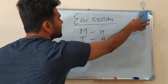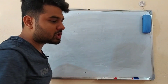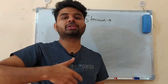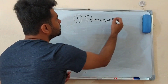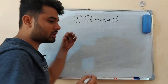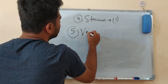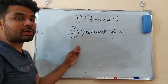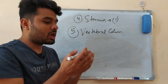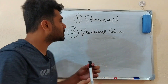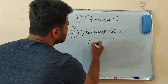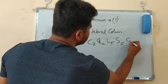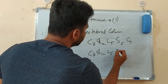Continuing with the axial skeleton, we now look at the vertebral column. The vertebral column in a child has more bones. The formula is: Cervical 7, Thoracic 12, Lumbar 5, Sacral 5, Coccyx 4 — giving 33 bones in a child. In an adult, sacral and coccyx fuse, so the total becomes 26.